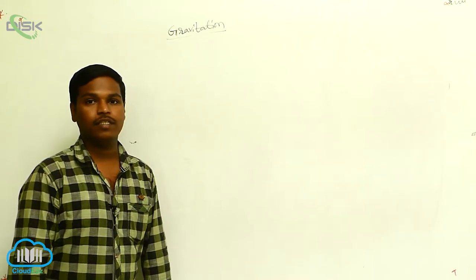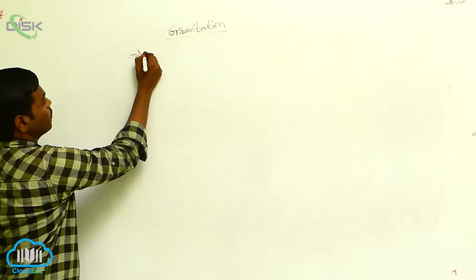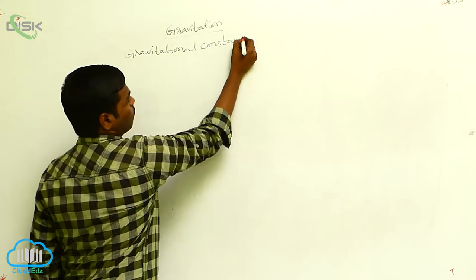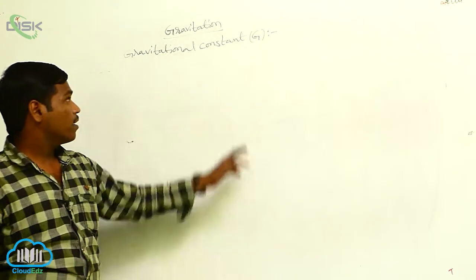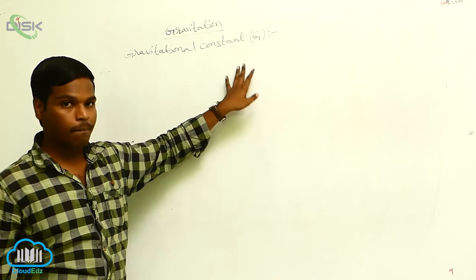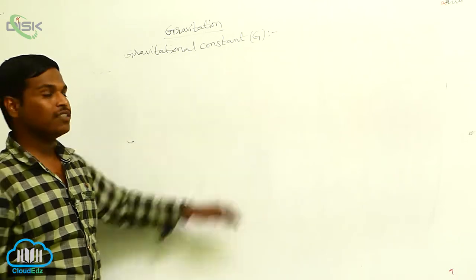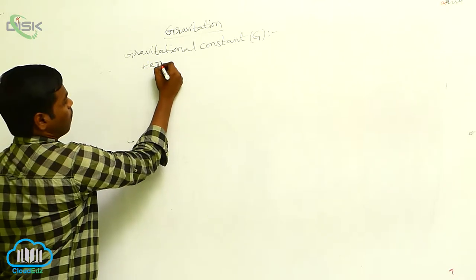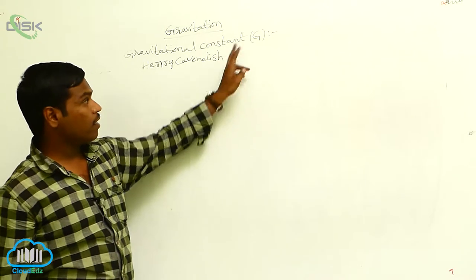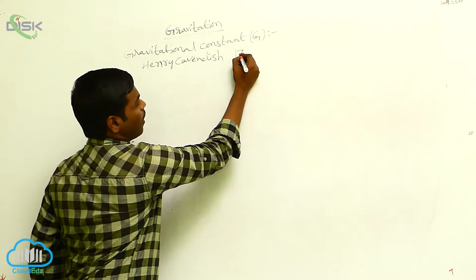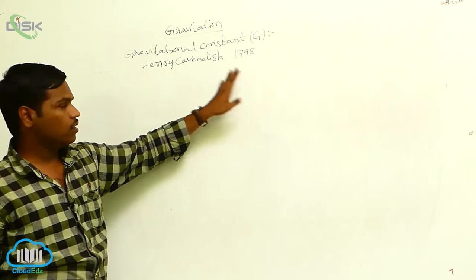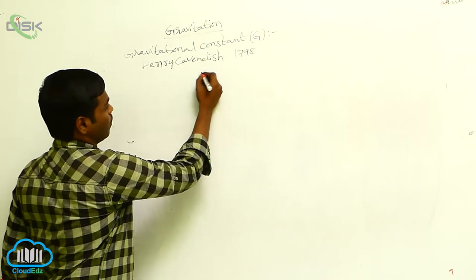We have to calculate the gravitational constant capital G. This universal gravitational constant is experimentally determined by an English scientist, Henry Cavendish. Henry Cavendish determined this G value experimentally in 1798, and his experimental procedure and schematic diagram is as follows.